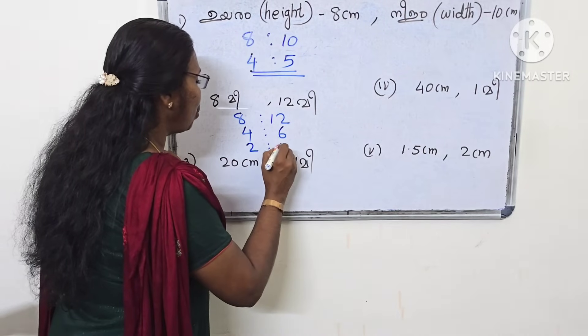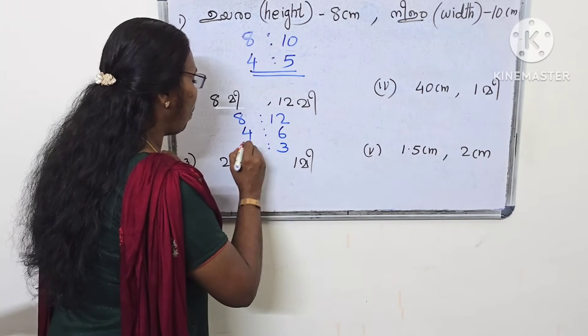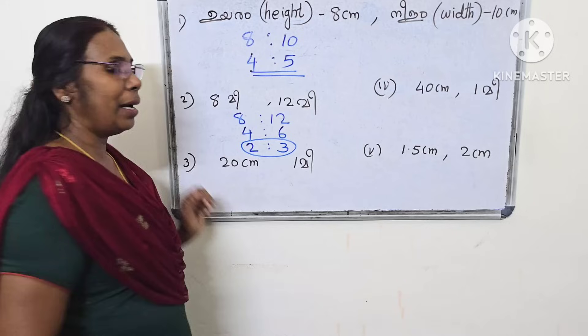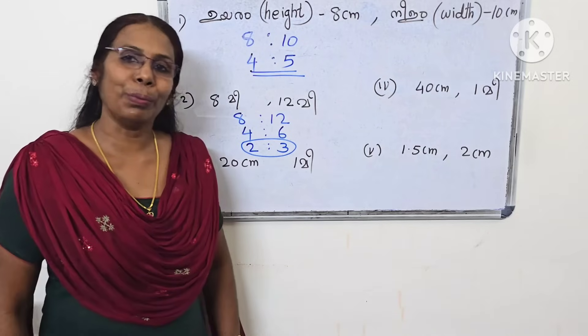The second answer is 2 to moon — that is, 2 to the simplified ratio.